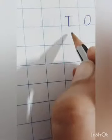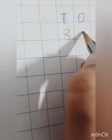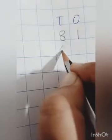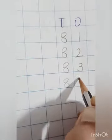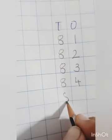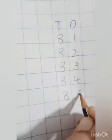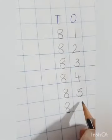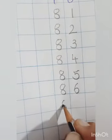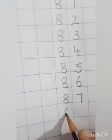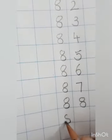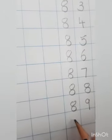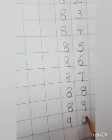Then after 80 what comes? 81. So, we will write here 8, 1, 81. 8, 2, 82. 8, 3, 83. 8, 4, 84. 8, 5, 85. 8, 6, 86. 8, 7, 87. 8, 8, 88. 8, 9, 89 and then 9, 0, 90.